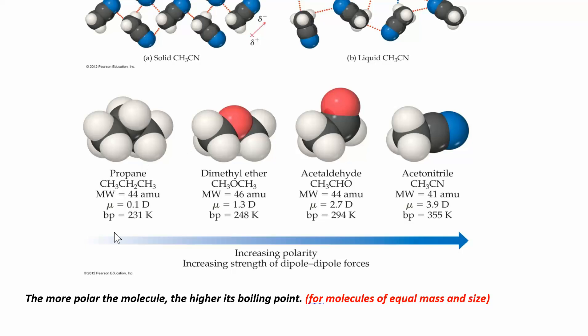Right now, we just need to know that if you increase the polarity of the molecule — comparing non-polar to polar — as long as they have about the same mass and size, the polar molecule should have a higher boiling point. Polarity and dipole moment are things you can measure and calculate. We're going to use Spartan, a computer simulation program in our lab, to calculate the dipole moment and compare which molecules are more polar.